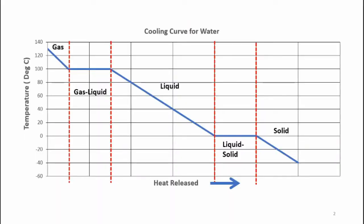Snow is an ice crystal and it's a solid. Now let's take a look at a cooling diagram. It shows what happens to the temperature of water as it gets cooled down from a gas down to a solid. Here is a cooling diagram for water, and some interesting things happen with the temperature of the water when it goes through various phase changes.